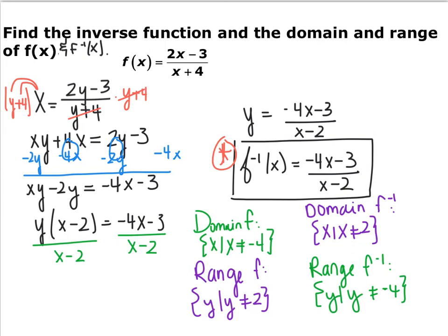To summarize: in one-to-one functions, every x is unique with no repeated x's. A function must be one-to-one to have an inverse that is also a function. For inverses, you switch the x and y coordinates. You can test whether two functions are inverses by taking the composite in both directions and checking if it equals x.